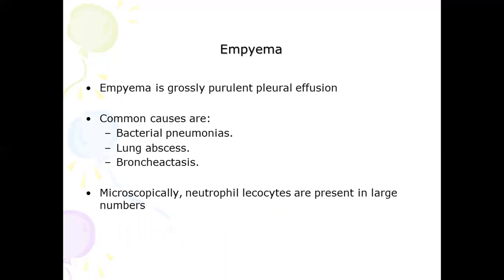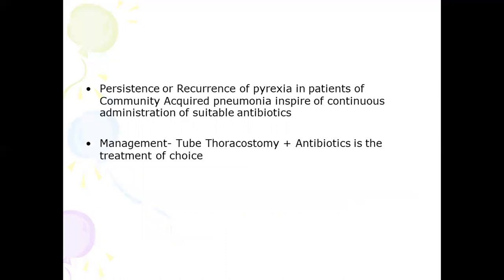Moving on to empyema — a complication of pneumonia. Empyema means a grossly purulent pleural effusion. Common causes include bacterial pneumonia, lung abscess, or bronchiectasis. Microscopically, neutrophil leukocytes are present in large numbers. Suspect empyema if a patient with community-acquired pneumonia has persistent or recurrent pyrexia despite continuous administration of suitable antibiotics. Management is by tube thoracostomy with antibiotics — intervention is needed if the patient develops empyema.